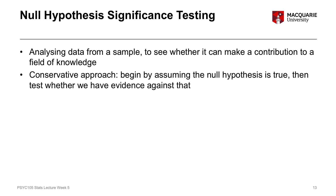The way NHST achieves this is by beginning with the assumption that the null hypothesis is true — that there is no effect, no relationship, no difference between groups — and then testing to see if we have evidence that's not consistent with the null hypothesis. We evaluate the data to see if there's enough evidence to reject the null hypothesis.